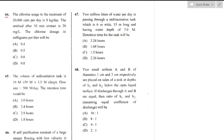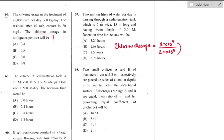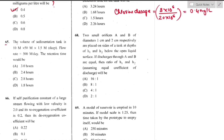Question number 64: Chlorine usage for treating 20,000 m³/day is 8 kg/day; residual chlorine after 10 min is 20 mg/L. Chlorine dosage = 8 × 10⁶ mg/day ÷ 20 × 10⁶ L/day = 0.4 mg/L — option A is the right answer.